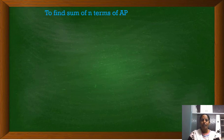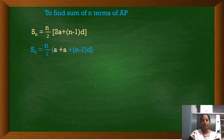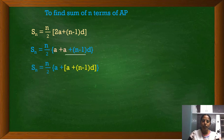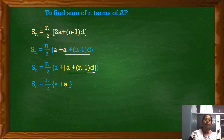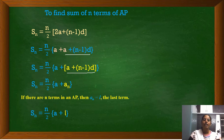Let us see one more form of this formula. Sn = n/2 · [2a+(n−1)d]. Splitting 2a+(n−1)d as a + [a+(n−1)d], we recognize that a+(n−1)d is the nth term of the AP, represented by An or L. So in place of a+(n−1)d, we substitute An. Now we have Sn = n/2 · (a + An). If we know the first term and the last term, we can easily calculate the sum of n terms. If there are n terms in an AP, An equals L, the last term. So we can write Sn = n/2 · (a + L).